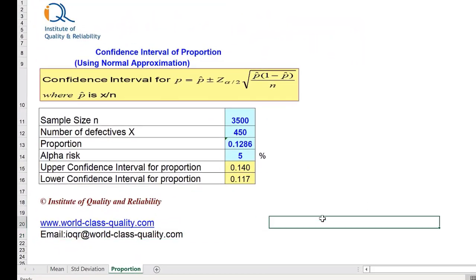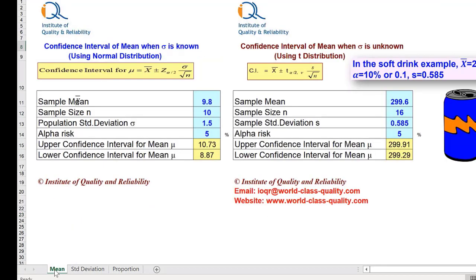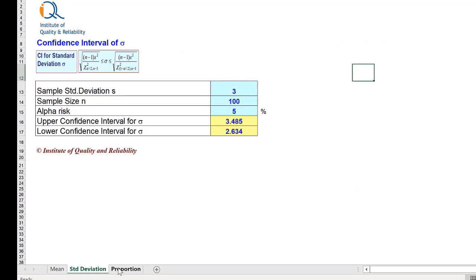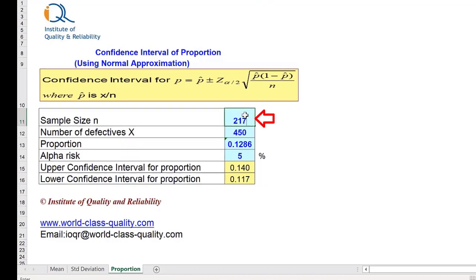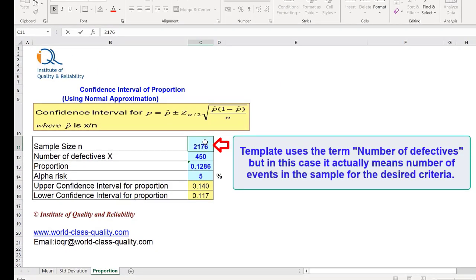As explained in our previous video confidence interval part 2, this has got 3 worksheets: Confidence interval for mean, standard deviation, and proportion. So we are using the third template, that is for proportion. The sample size is 2176. Template shows number of defectives, but we can consider it as number of events in this particular case.